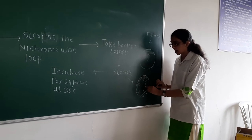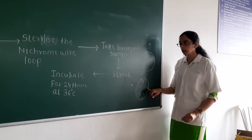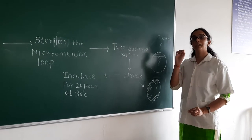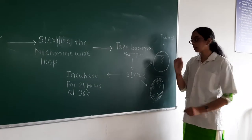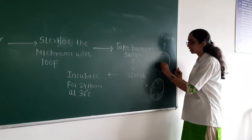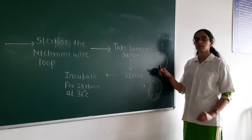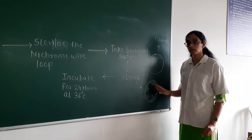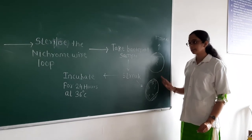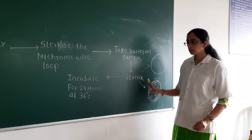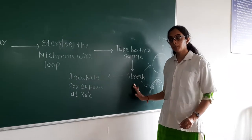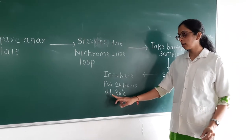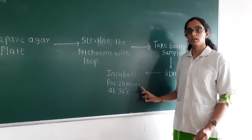Similarly for the T-streak, you take the bacterial sample only once, streak it, and then streak it in a zigzag line. That is the major step in the streak plate technique. After streaking, close the plate and then incubate it for 24 hours at 36 degrees Celsius.